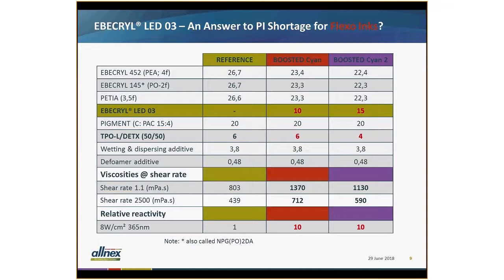With that background, we tried to see if EverCryl LED03 could be an answer to the photo initiator shortage. Using the best formulation from the earlier slides — called the 'boosted cyan' — as a reference, we introduced five percent more EverCryl LED03 and at the same time decreased the photo initiator from six to four percent. Looking at the relative reactivity, we achieved the same reactivity, and the influence on viscosity was minimal. So by increasing EverCryl LED03 and reducing photo initiator, you can still achieve the same reactivity.